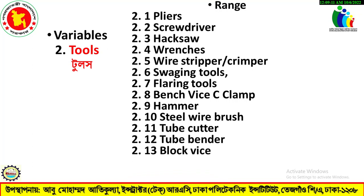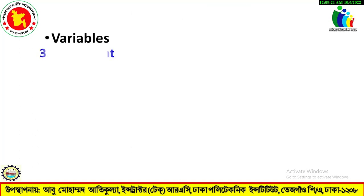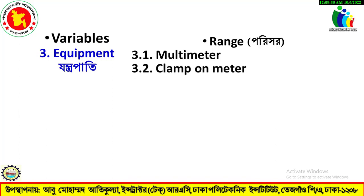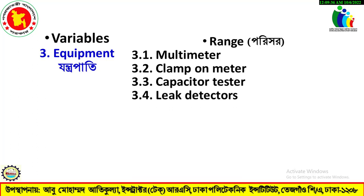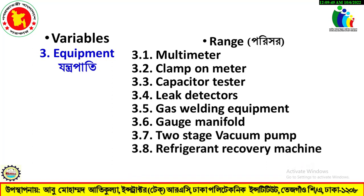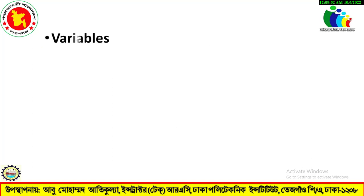Tools continued: block vice, reamer, Allen key set. Number three, Equipment: multimeter, clamp-on meter, capacitor tester, leak detectors, gas welding equipment, gauge manifold, two-stage vacuum pump, refrigerant recovery machine.